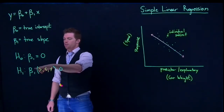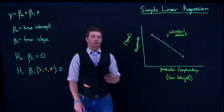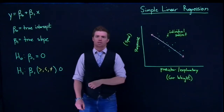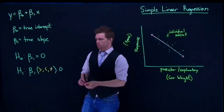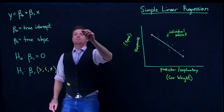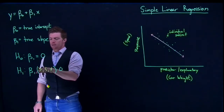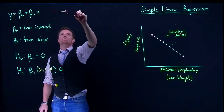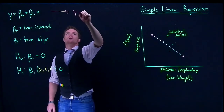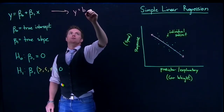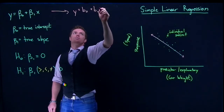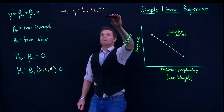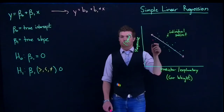Beta 1 is the population parameter we are interested in estimating, and we want to get a confidence interval for it. The sample statistic that approximates beta 1 is b1. When we take a sample and perform simple linear regression, we can produce the equation y equals b0 plus b1 times x.